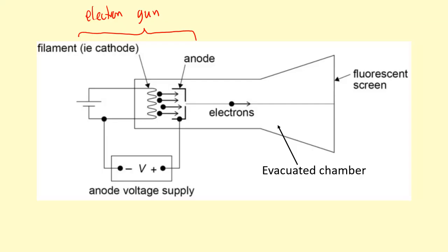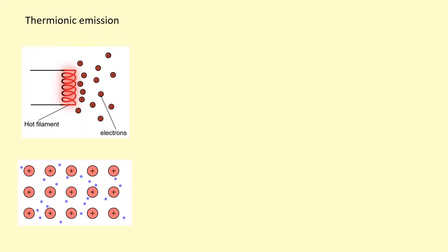So that the electron beam can go from one end to the other end without being stopped by the particles, without colliding with the particles and losing all its energy. When it gets to the other end it's going to produce a spot. Let's look at what's happening. On the left hand side you have a high voltage applied.